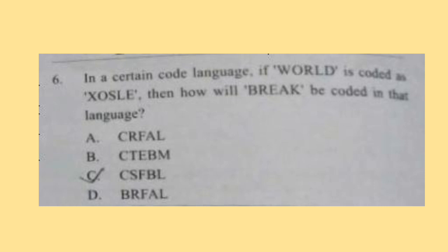Question 6: In a certain code language, if WORLD is coded as X, O, S, L, E, then how will BREAK be coded in that language? Here, in WORLD the 2nd and 4th alphabets, O and L, remain the same. The 1st, 3rd and 5th letters are coded by their successive letter — X, S and E respectively. So similarly for BREAK: B, E and K will be replaced by C, F and L respectively, and R and A will remain the same. So the code will be C, R, F, A, L — that is option A. Option A is the correct answer.